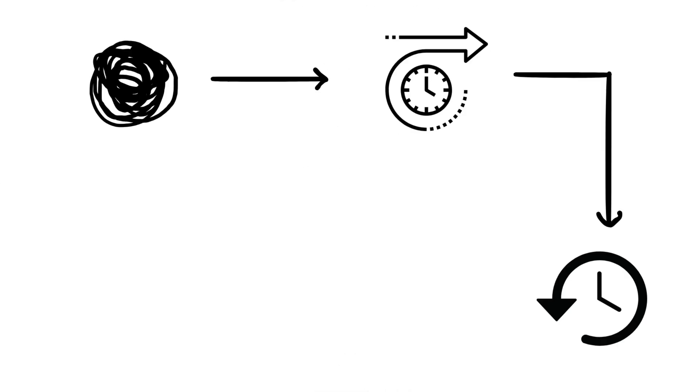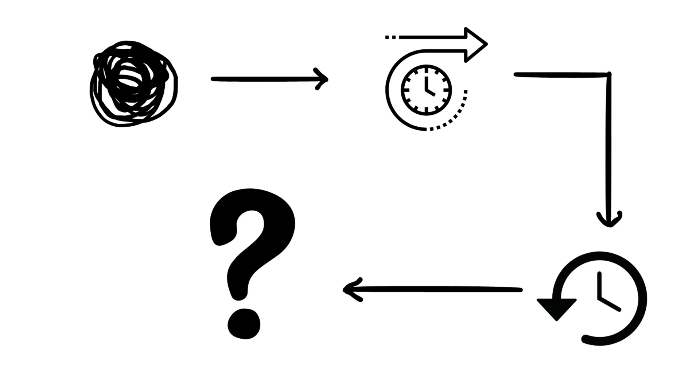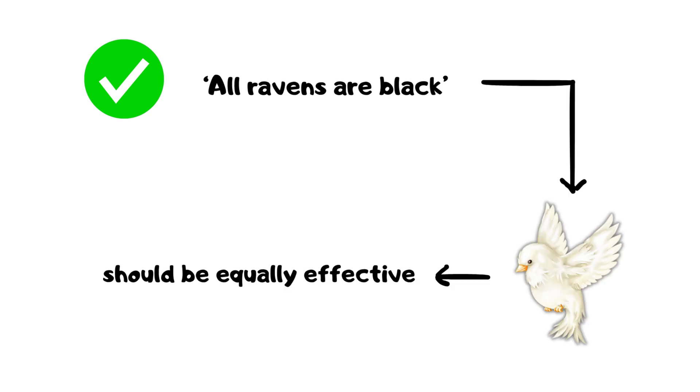Bootstrap paradox. If something is discovered in the future and sent back to the past, what is the source of this information? Raven paradox. To verify the statement all ravens are black, seeing a white bird should be equally effective.